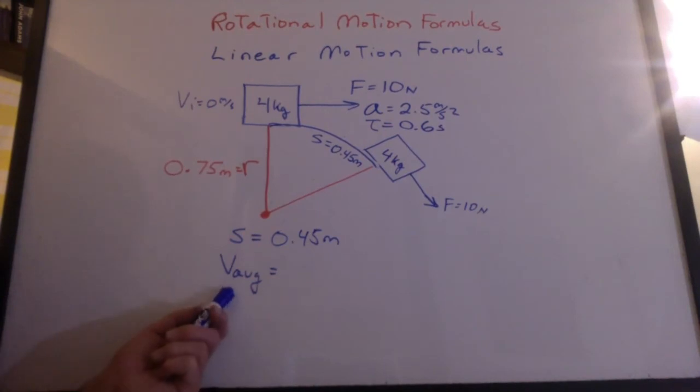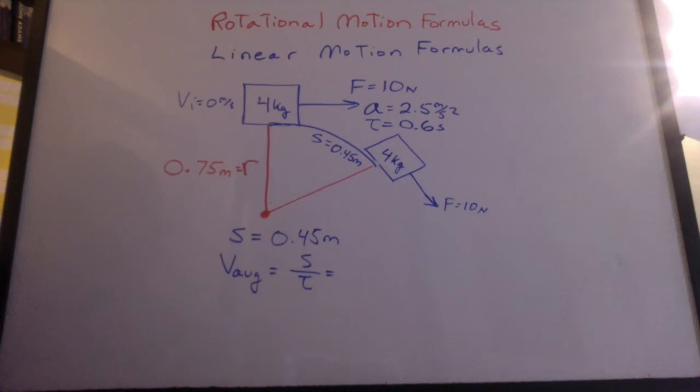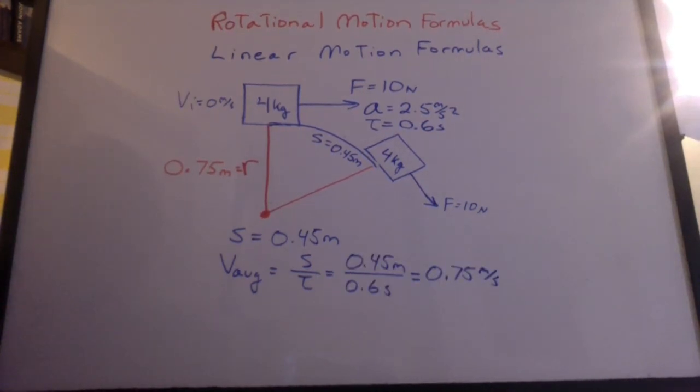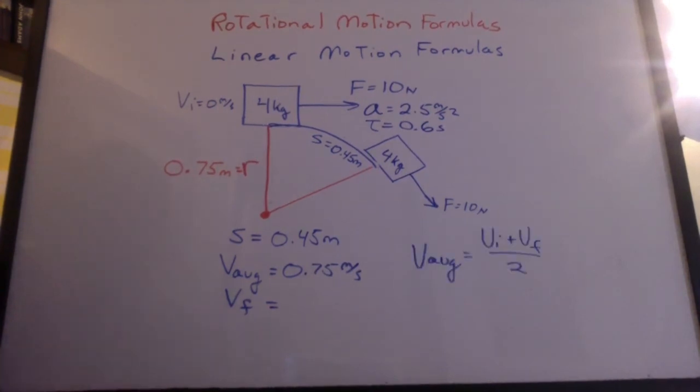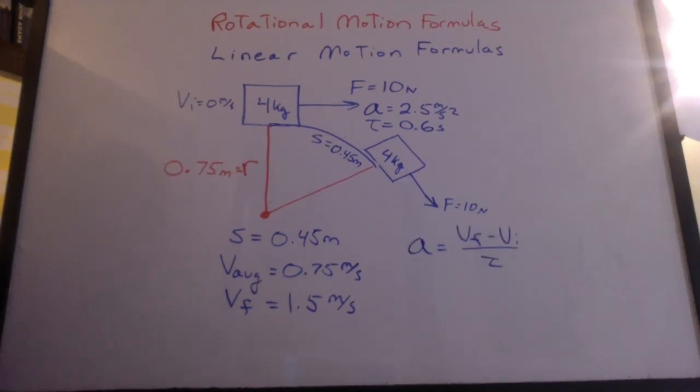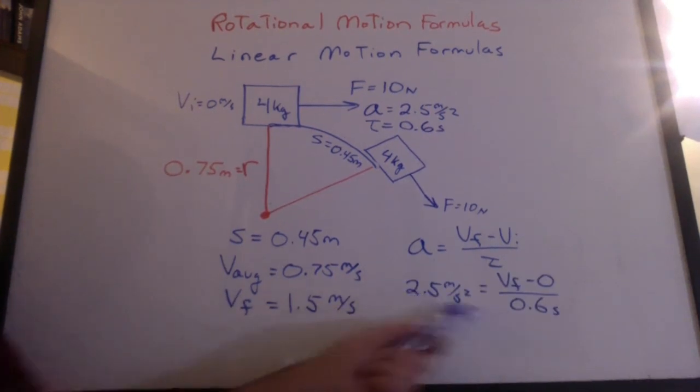Could you find the average velocity from here to here? You can just say it's the distance over the time. We get 0.75 meters per second. How could you get the final velocity? We could just use this and we'll have 1.5 meters per second. Or we could use our definition of acceleration. Plug in the numbers and you'll still get 1.5 meters per second.